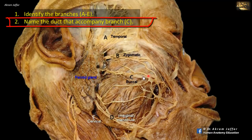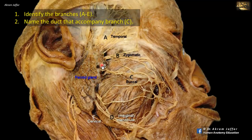The duct located here, accompanying the buccal branches of the facial nerve, extends from the anterior border of the parotid gland. It's the parotid duct. It opens against the second upper molar tooth in the vestibule of the mouth.